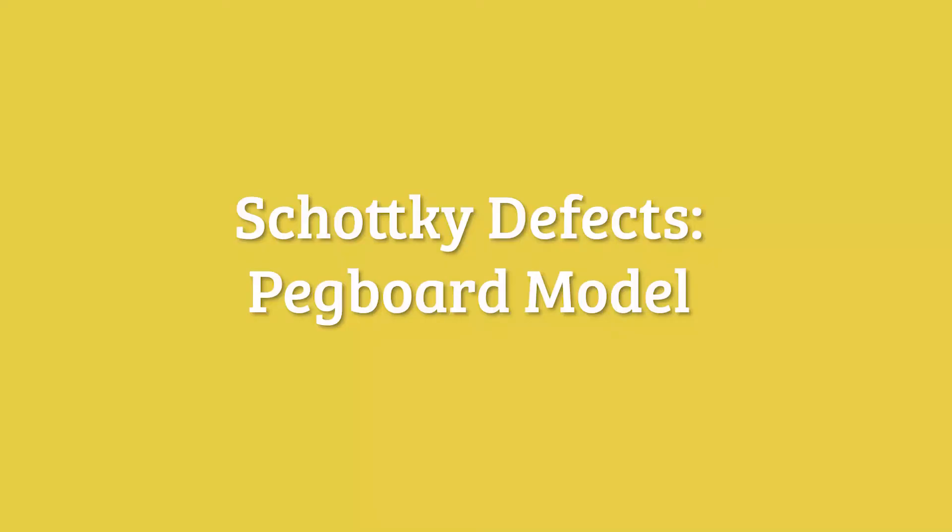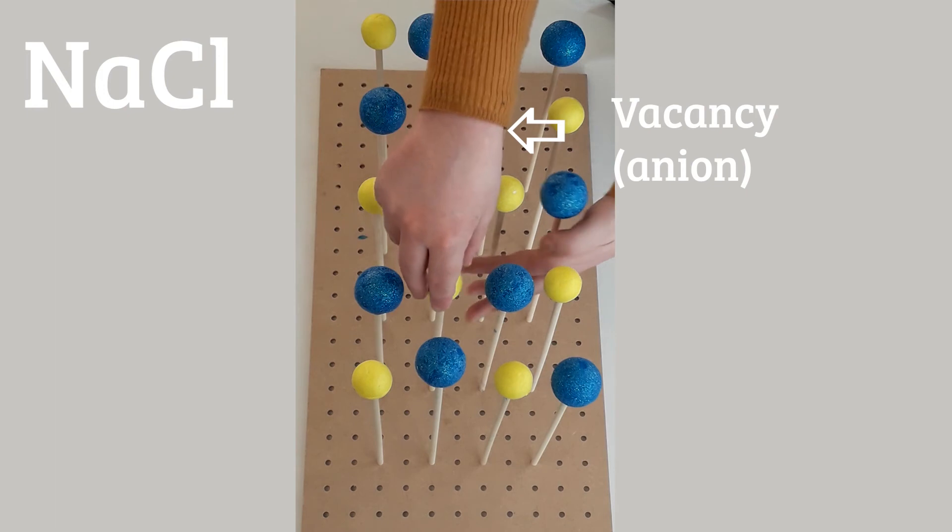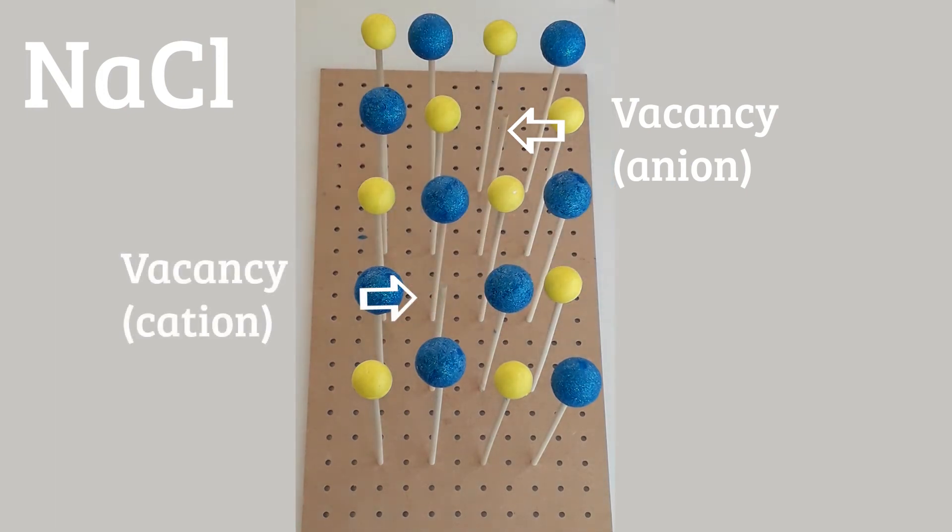We can visualize Schottky defects with the pegboard model. We can see the same array of atoms as we visualized with the tower block set previously. Using an example of sodium chloride again, where we have the creation of a cation vacancy, to maintain the charge balance overall, an anion vacancy must form.